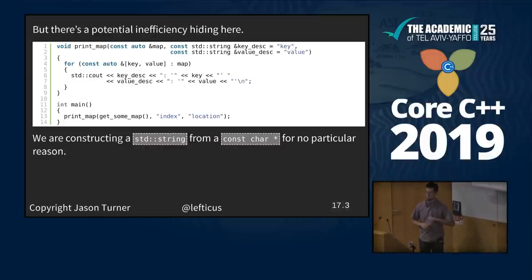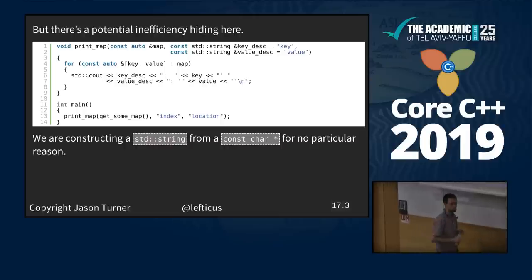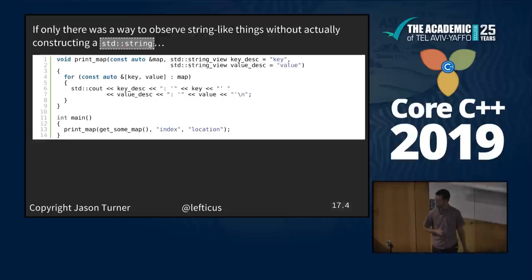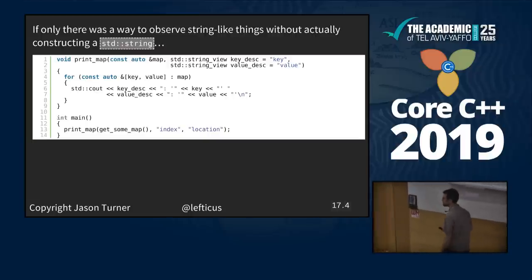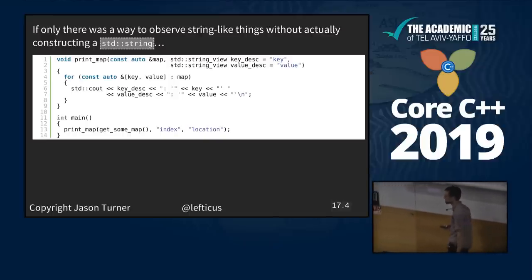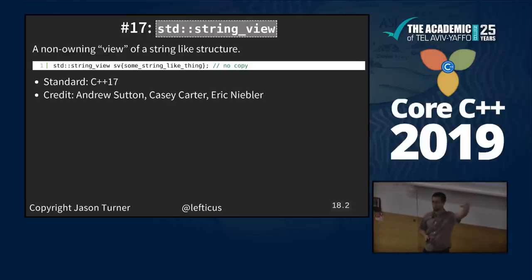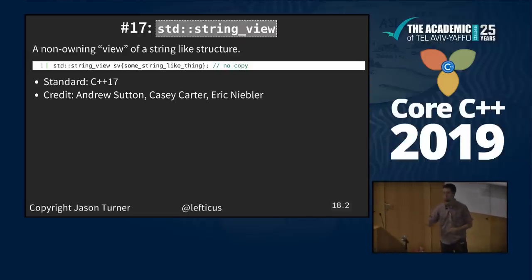This code has a potential inefficiency hiding: I am requiring construction of a string object whenever I call my print_map function. If only there was some way to observe string-like things without actually constructing a string. String view! I can say this is a string_view — it's a string-like thing, just do what I need with it. Non-owning view of a string-like structure, no copies made of the data — we are pointing into it. Added in C++17. Andrew Sutton, Casey Carter, Eric Niebler come up again.